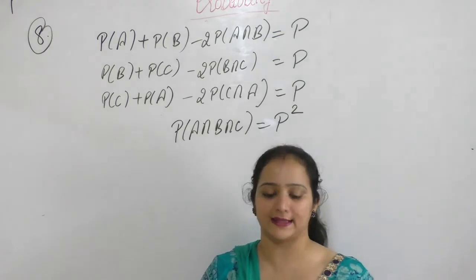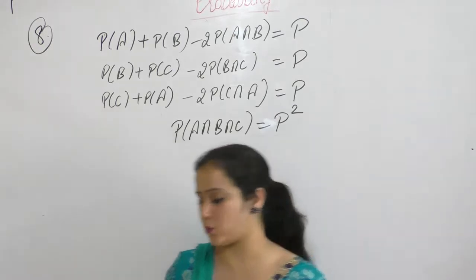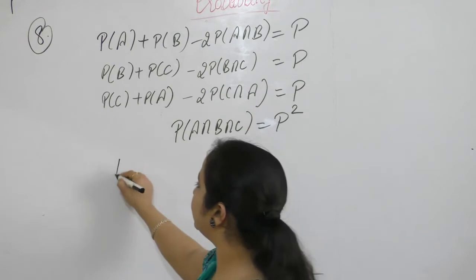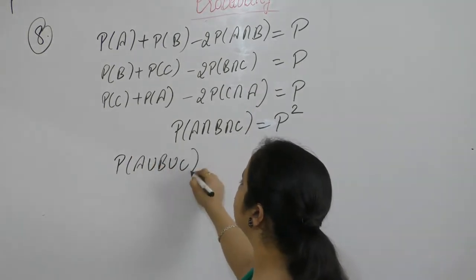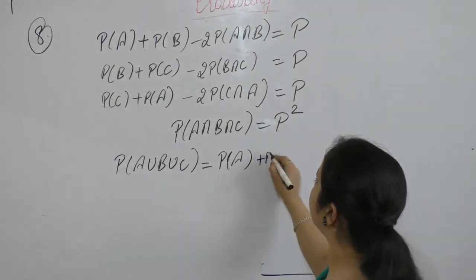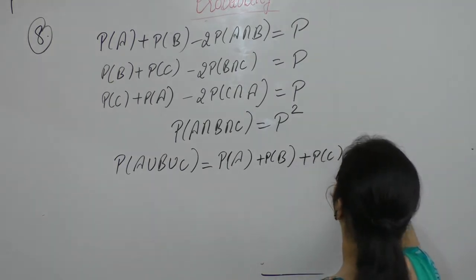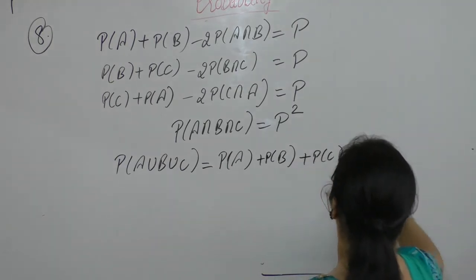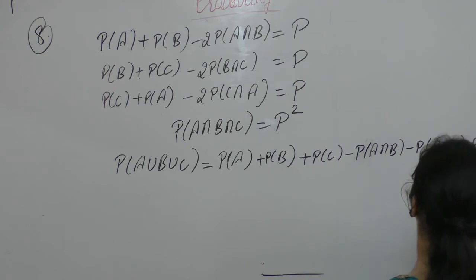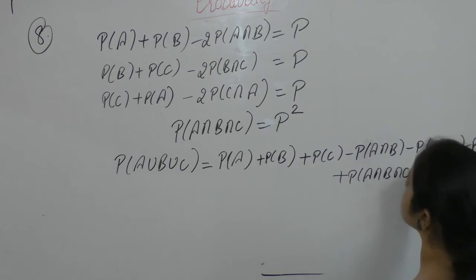Where 0 is less than P less than half. Find the probability of occurrence of at least 1 of the 3 events A, B, and C — that is, probability of A union B union C. Using the formula: probability A plus probability B plus probability C minus 2 times probability A intersection B minus probability B intersection C minus probability C intersection A plus probability A intersection B intersection C.